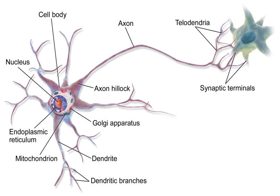Most ion channels are permeable only to specific types of ions. Some ion channels are voltage-gated, meaning that they can be switched between open and closed states by altering the voltage difference across the membrane. Others are chemically gated, meaning that they can be switched between open and closed states by interactions with chemicals that diffuse through the extracellular fluid. The ion materials include sodium, potassium, chloride, and calcium.